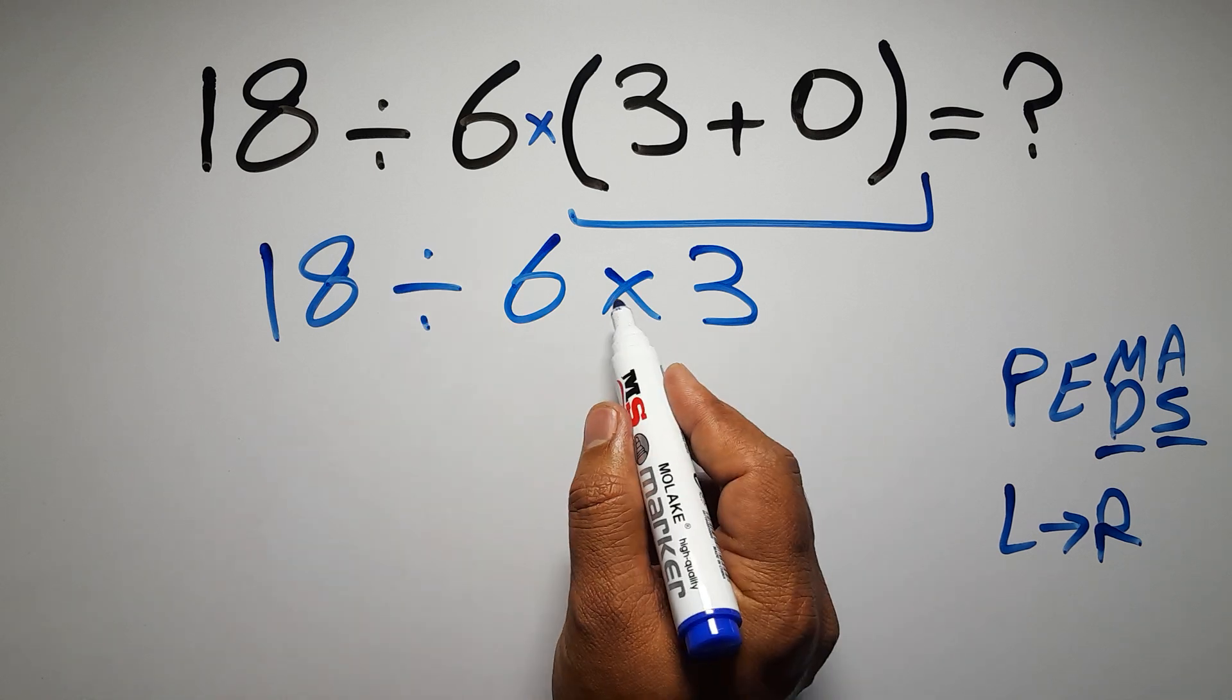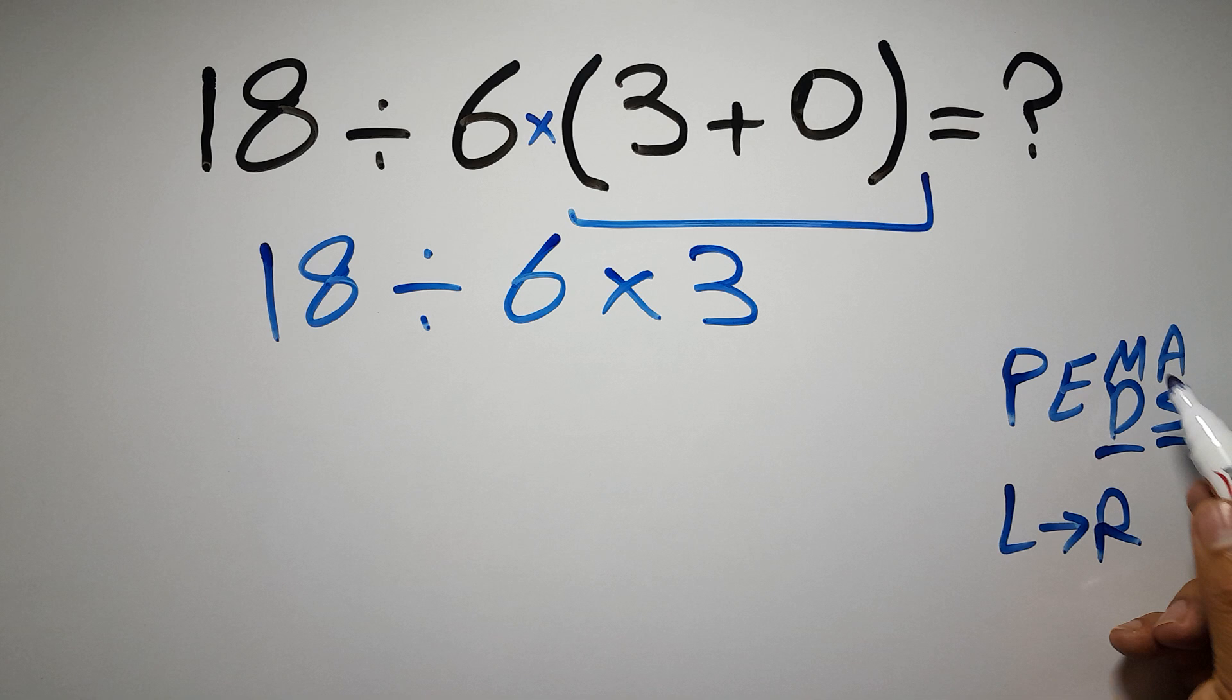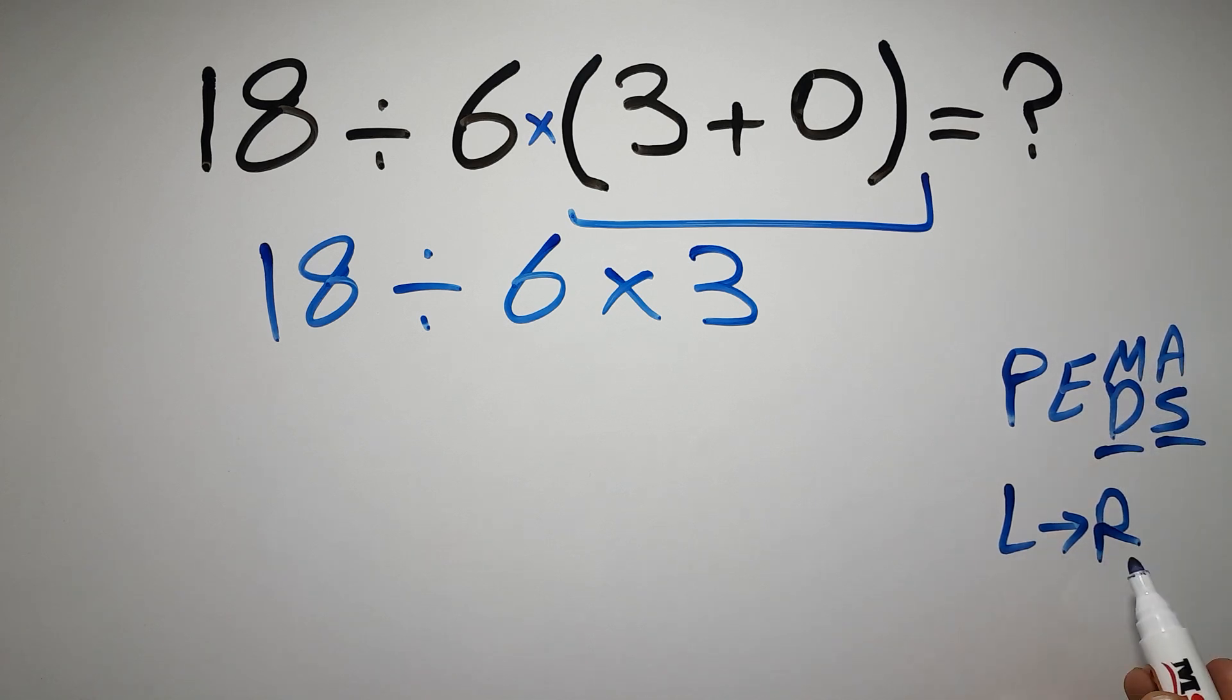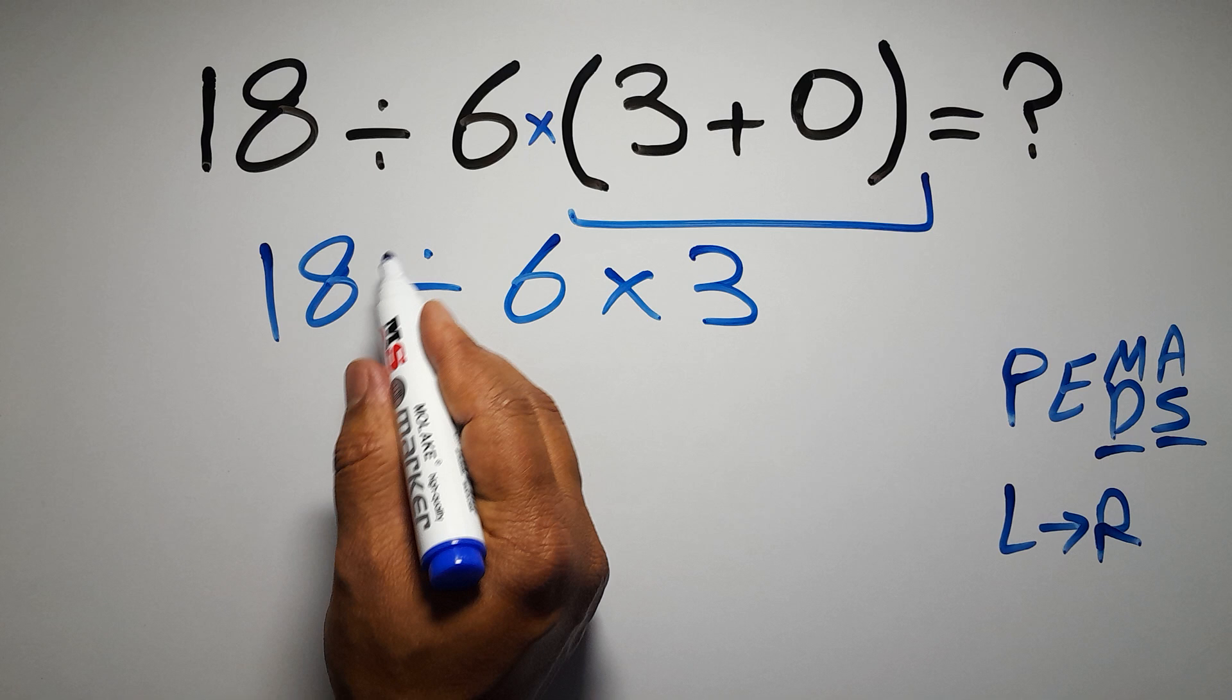Now, we have one division and one multiplication. As I said, multiplication and division have equal priority, and we have to work from left to right. So, here first we have to do this division.